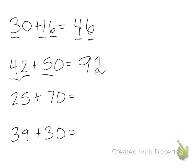The next one we have 25 plus 70. And we add the tens place first. So if 2 plus 7 is 9, then what's 5 more? That's going to be 95.